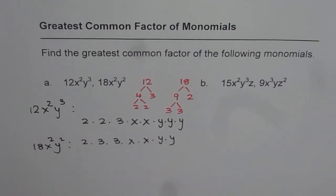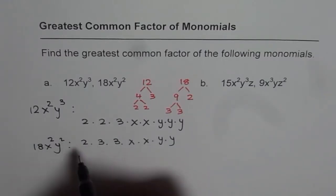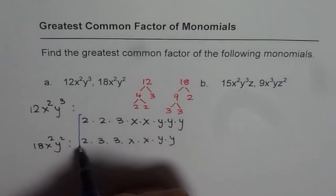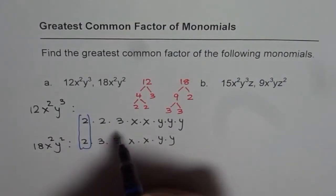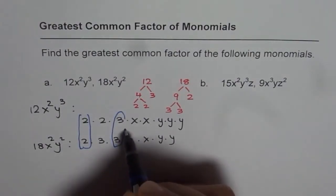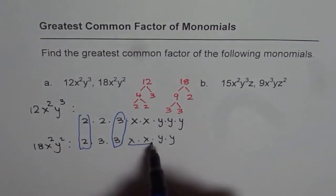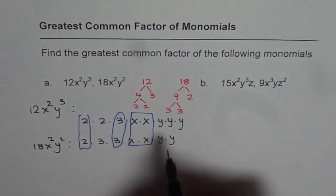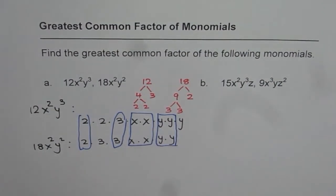So the first step is to write down all the prime factors. Now let's list out the common factors. Now out of these two, the common factors are 2's. Then we have 3's, they are common. Two of these x's are common. Even two of these y's are common. So these are all the common factors.